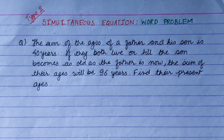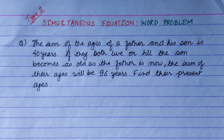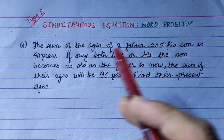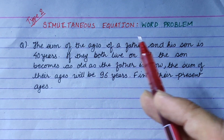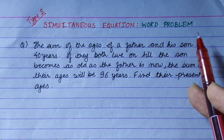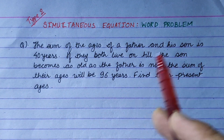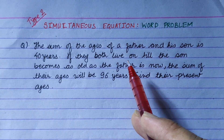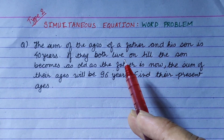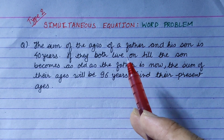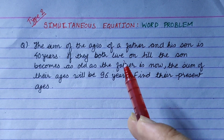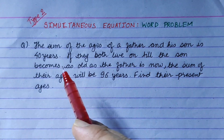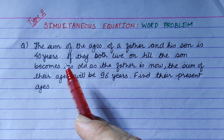Hi everyone. Aaj mele simultaneous equation ko second type ko word problem le raya kashu. Yo age shangha sambandhi chha — age wala numerical ma ni two-digit number jha chai frequently shodne gari chha. Question ma jau.